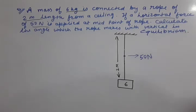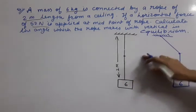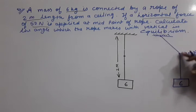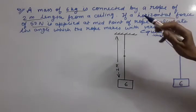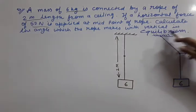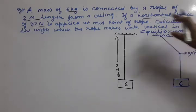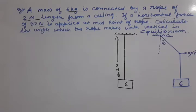So what will be happening? Let us draw the diagram. At the midpoint we have applied a force of 50 Newton, and you can see the rope position will be a little tilted. This 6 kg will remain vertical because under gravity it will remain straight vertical. Now the question is: calculate the angle which the rope makes with vertical in equilibrium. We have to find out this angle theta.